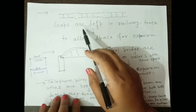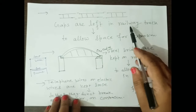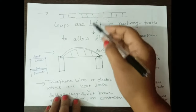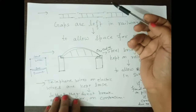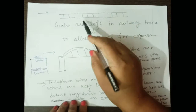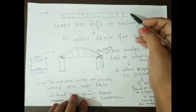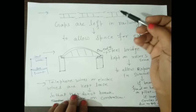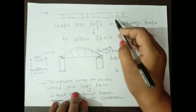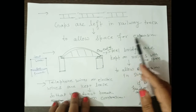You must have observed that gaps are left between railway tracks at the ends of each track. Why are these gaps left? The railway track is made of iron, which is a metal, and metal expands on heating. When a train runs on the track or during summer, the iron track expands. So, gaps are left in the railway track to allow space for expansion.